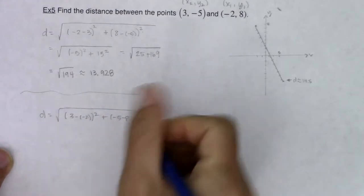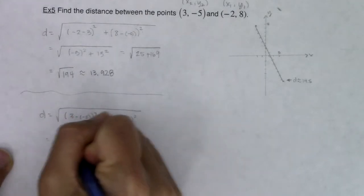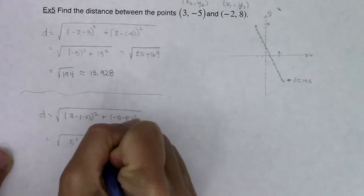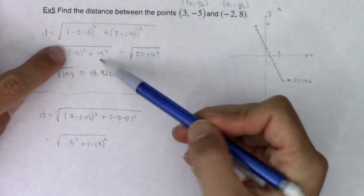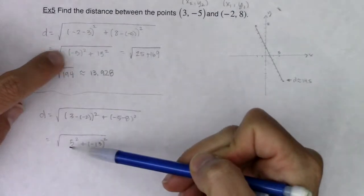Alright, now when I square this, I'm going to get the square root of 5 squared plus -13 squared. And you can see I'm getting the same numbers, like their absolute values are the same, 5 and -5, and 13 and -13.